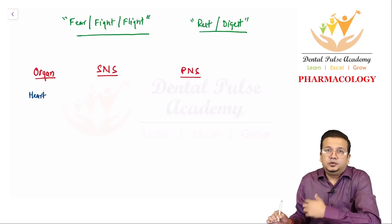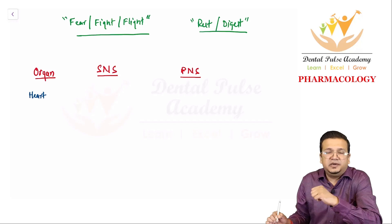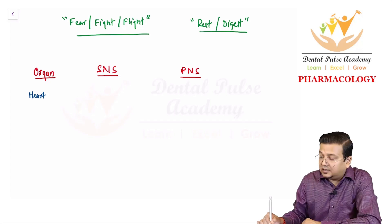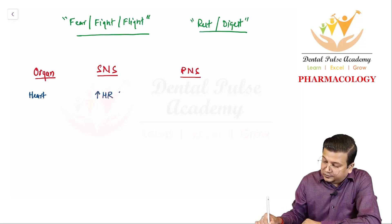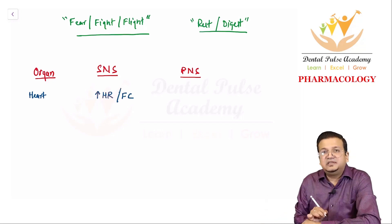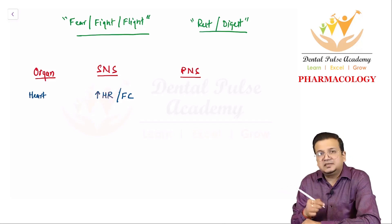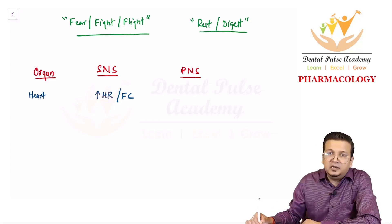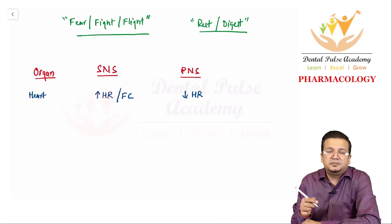Whenever you have stress, the heart starts beating faster and with more force. So sympathetic stimulates the heart — it increases heart rate (HR) and force of contraction (FC). Parasympathetic does the opposite: it inhibits the heart and decreases heart rate. Sympathetic stimulates heart; parasympathetic inhibits heart — simple to remember.